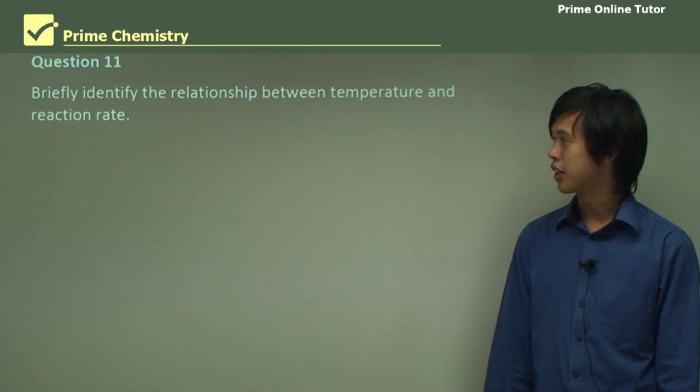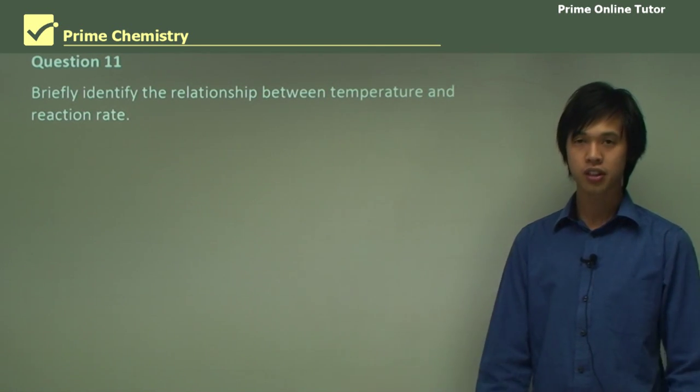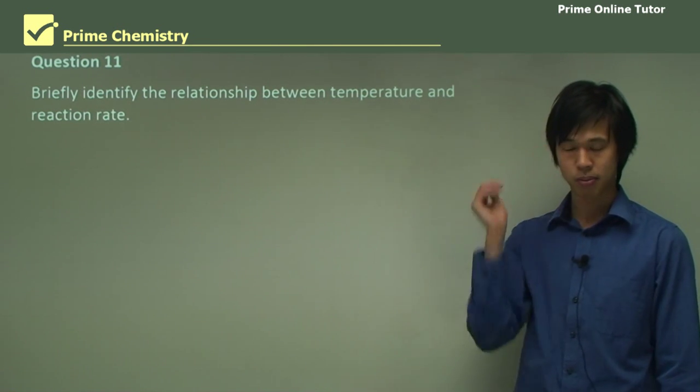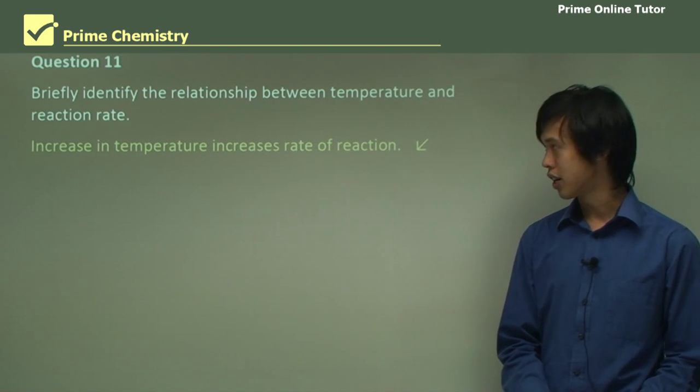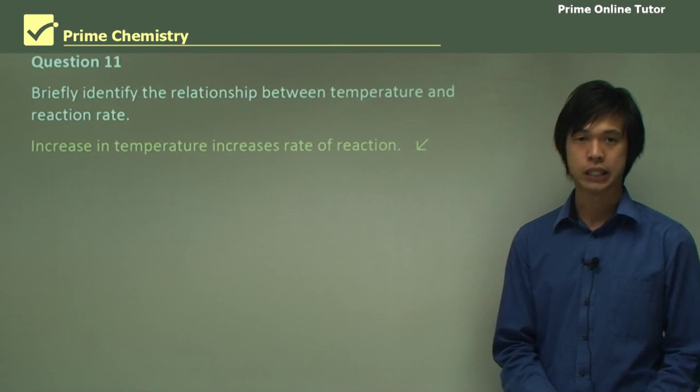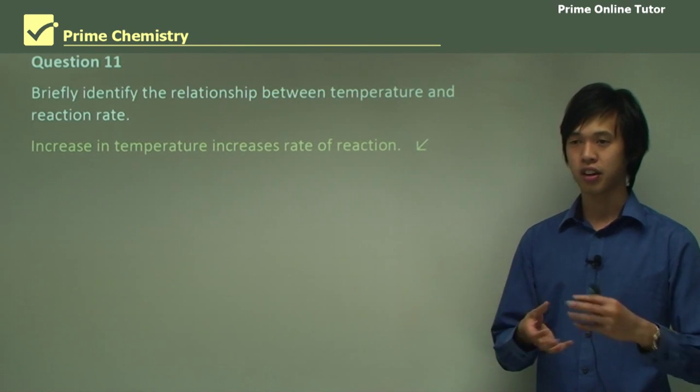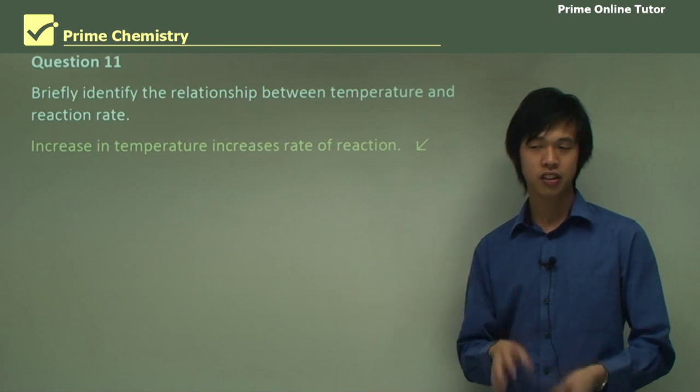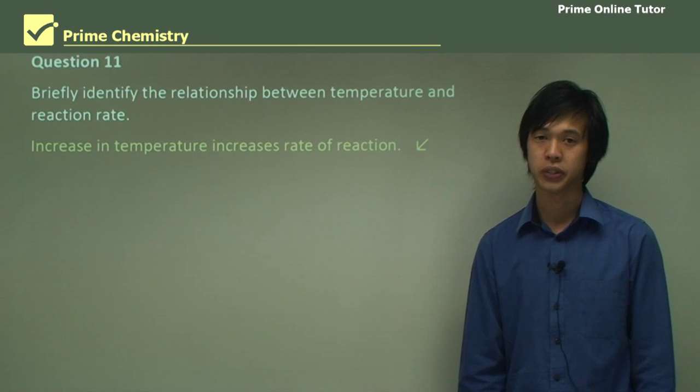So question 11, briefly identify the relationship between temperature and reaction rate. Okay, so we should know this by now from various other studies throughout chemistry. An increase in temperature increases the rate of reaction, both forward and backward. Because the increased temperature gives you increased kinetic energy, and increased kinetic energy means that we can collide more frequently, giving you increased reaction rate.